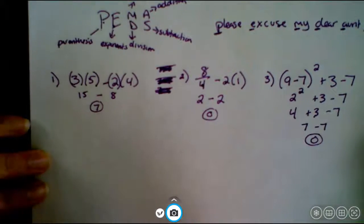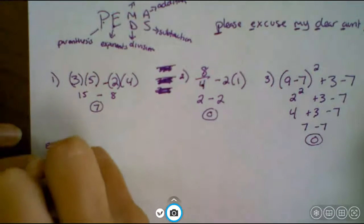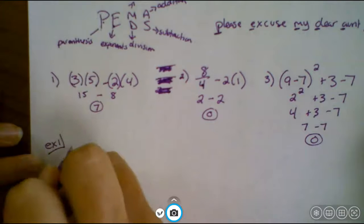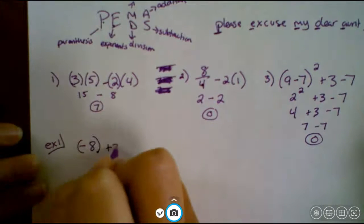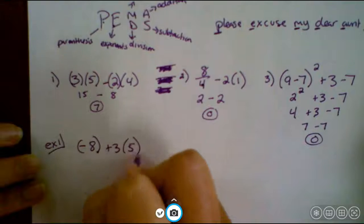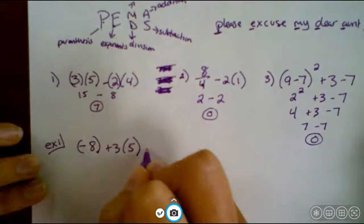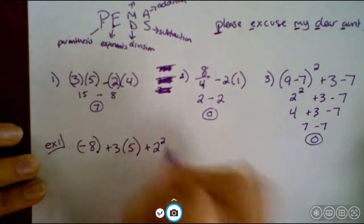Okay, I want you guys to write this next one down. So this is your first practice problem on your own, and I want you to pause the video, work it out, and see what you get. So we have negative eight plus three times five plus two squared.